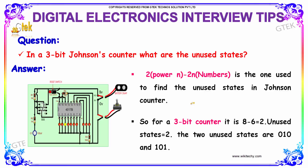So, for a 3-bit counter, it is 8 minus 6 equal to 2. That is the number of unused states, which is 2. The two unused states are 0-1-0 and 1-0-1.